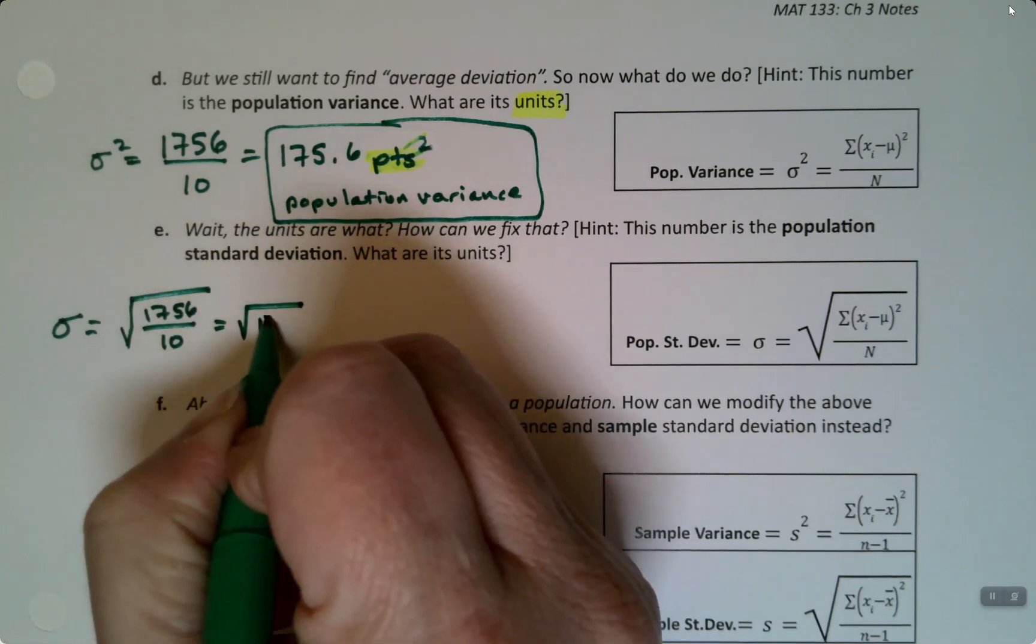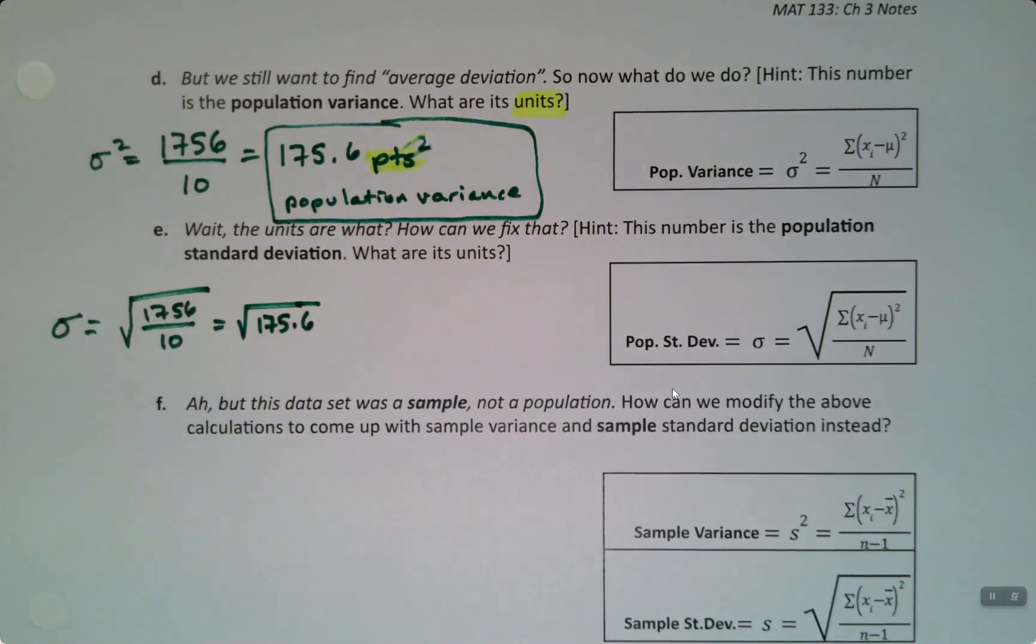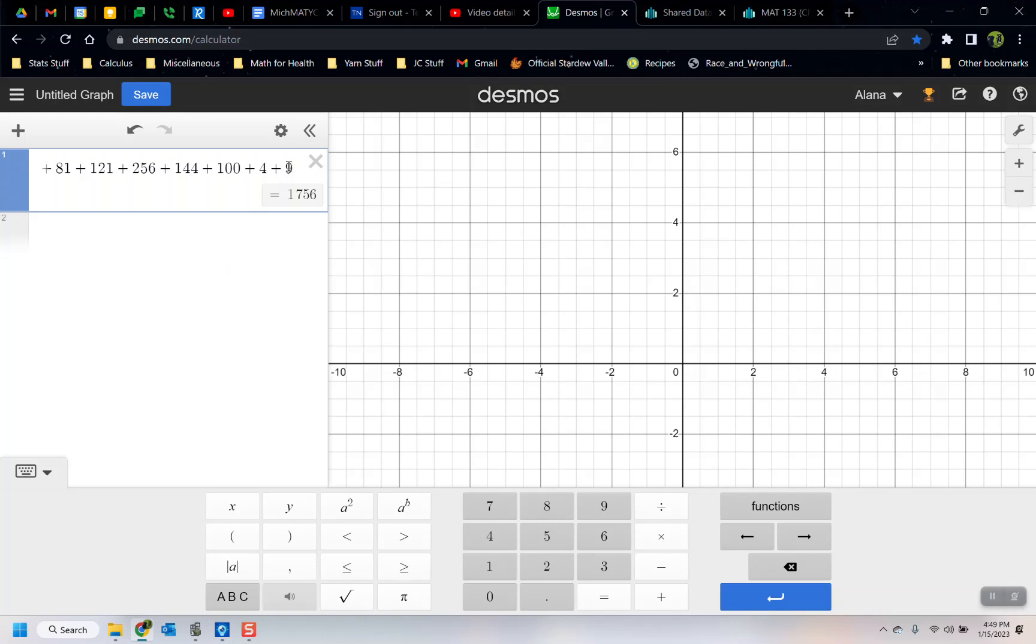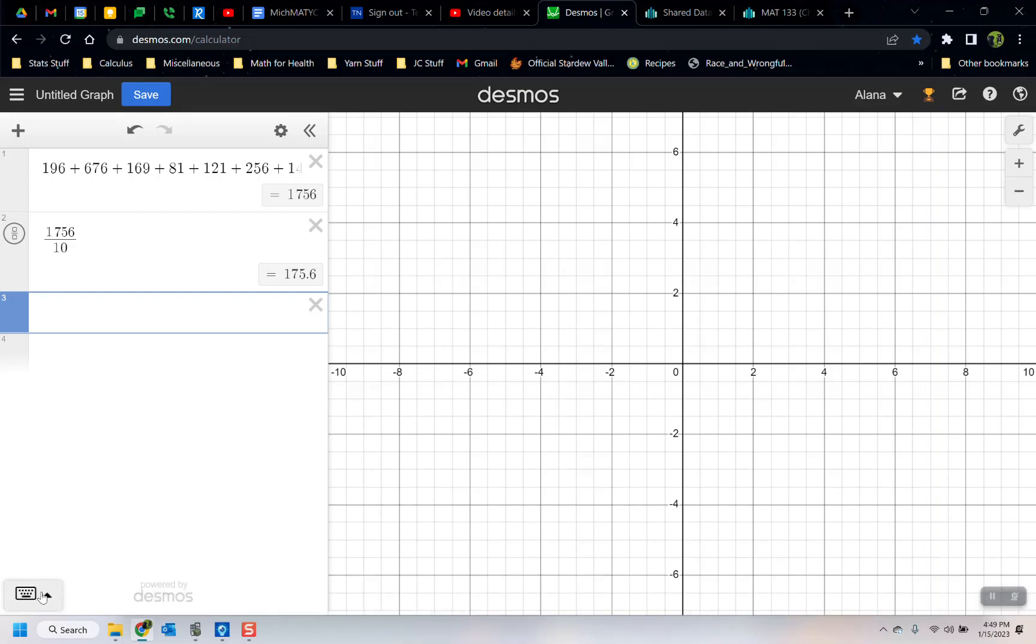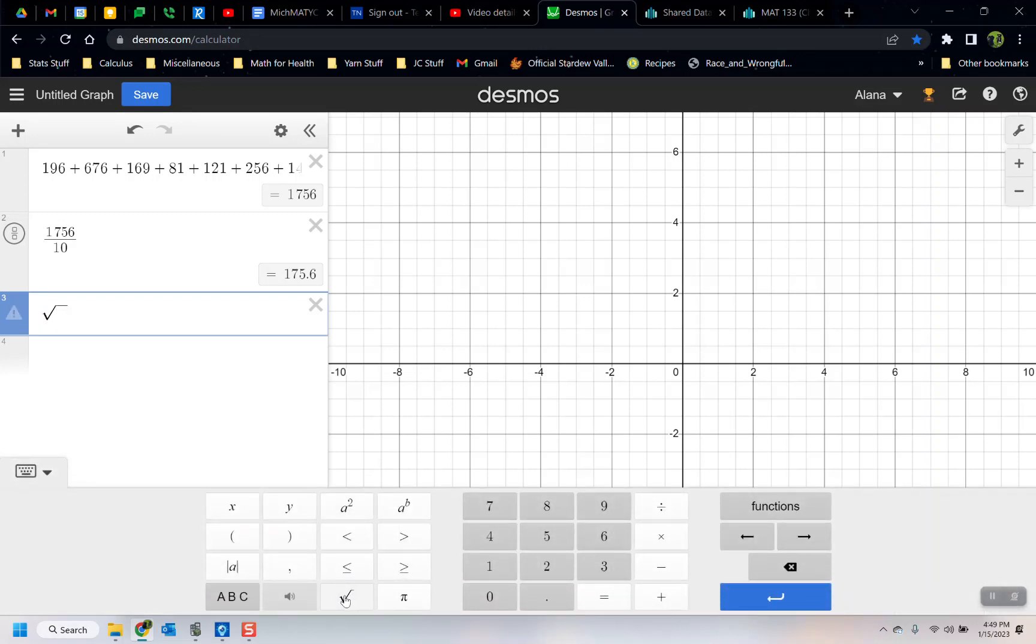So sigma is the square root of 1756 over 10. Let me go to Desmos just to show you how to do something like that. If I want 1756 divided by 10, there you go. And if I want the square root of that, in the palette—this little keyboard palette, the keypad—it's the one that looks like a checkmark next to the pi symbol. The other way to do it, the way I generally do it, is typing s-q-r-t. It knows what I want, it knows I want the square root, so it just turns it into the root for me.